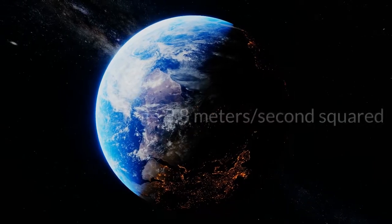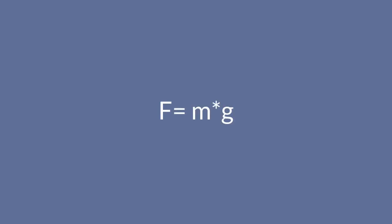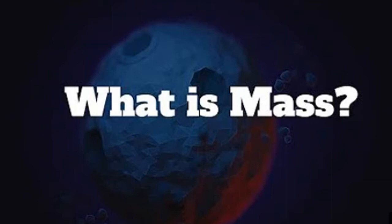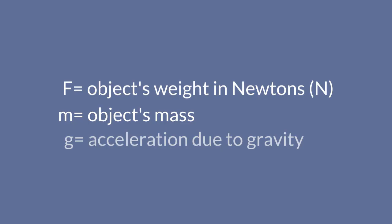The formula for calculating weight is F equals m times g, where F is the object's weight in newtons, m is the object's mass—check out our video on mass if you want to know more about it—and g is the acceleration due to gravity.